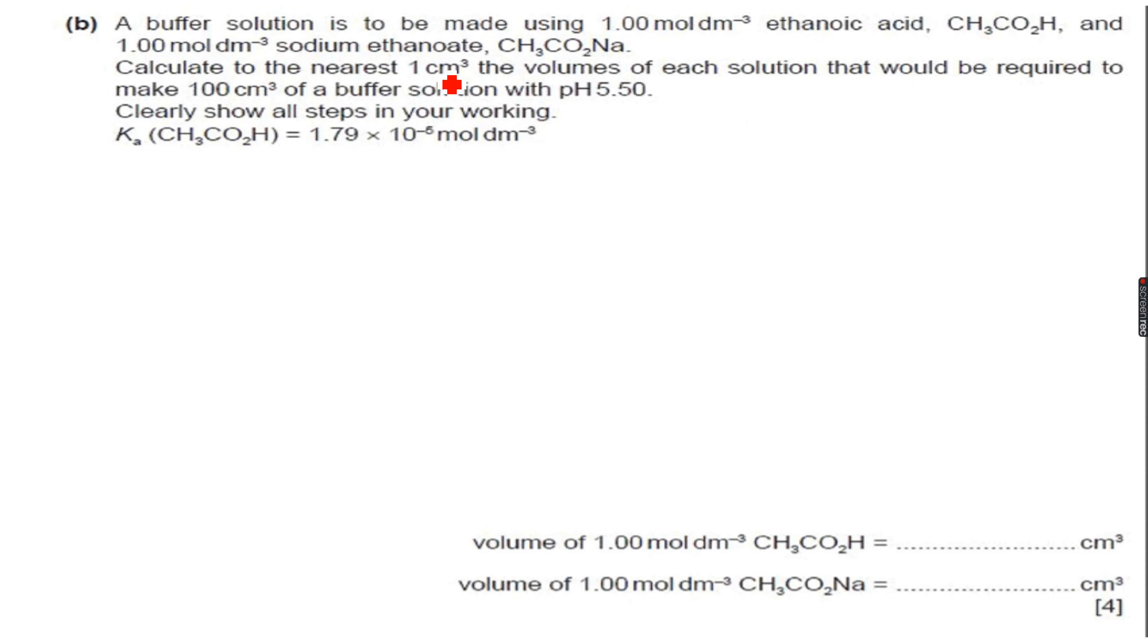That would be required to make 100 cm³ of a buffer solution with pH 5.5. Clearly show all the steps in your working. So the first step - they have given the value of Ka - so the first step is to write the two reactions taking place. So one reaction is ethanoic acid giving me H+ aqueous plus ethanoate ions aqueous.